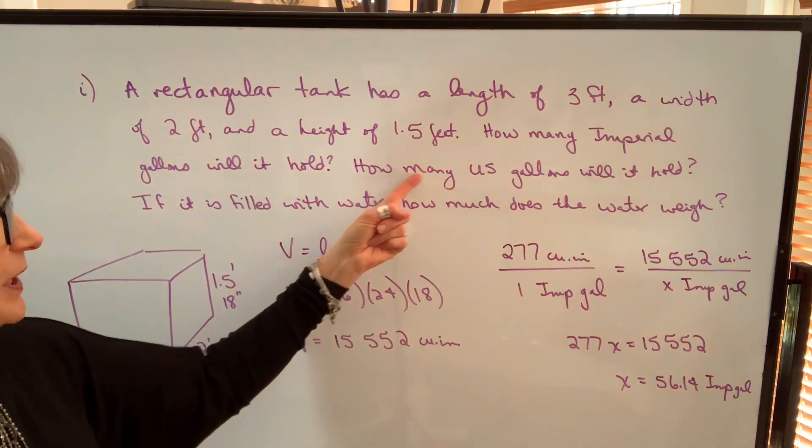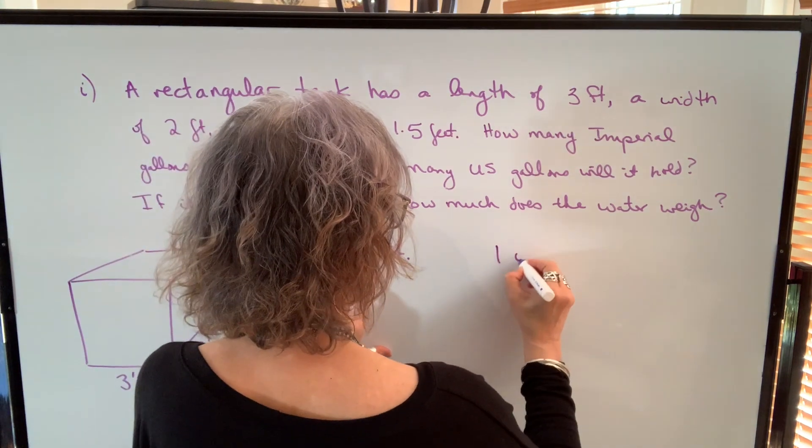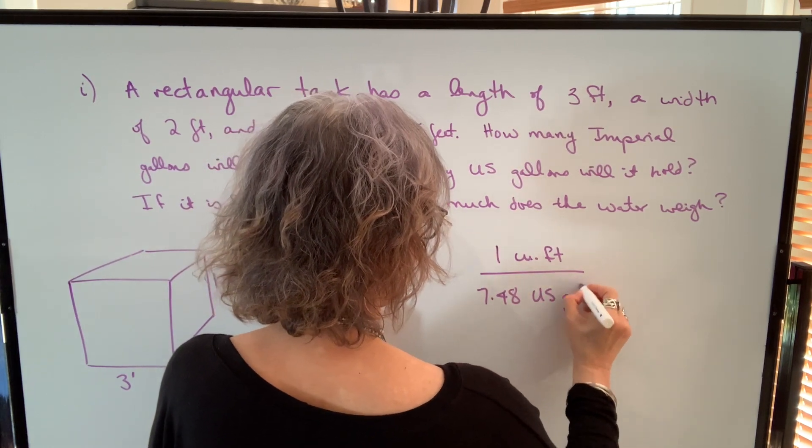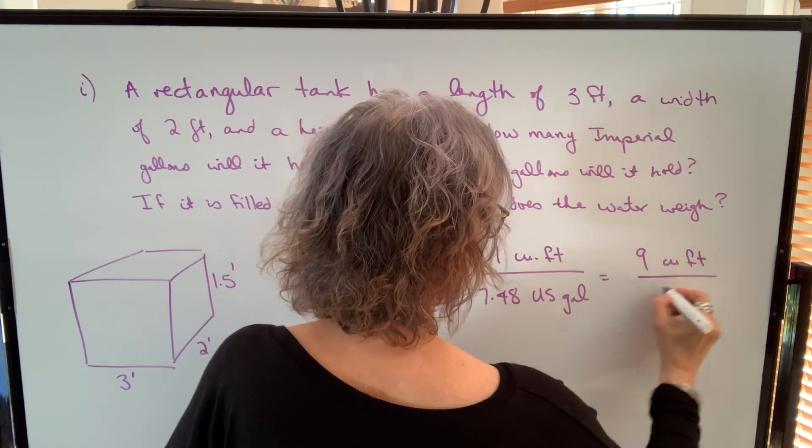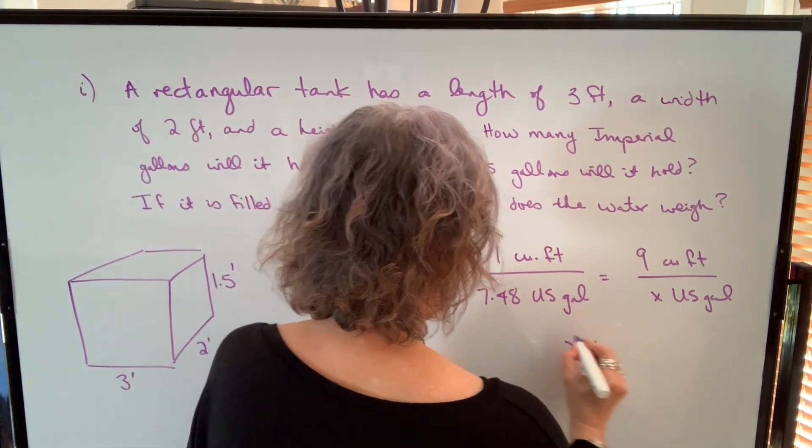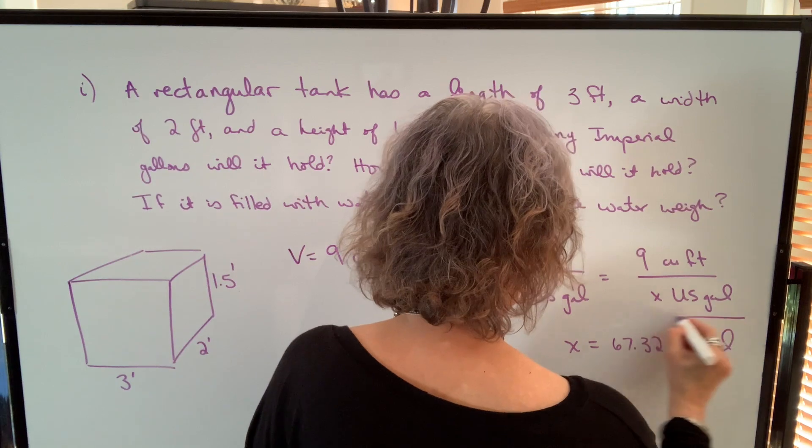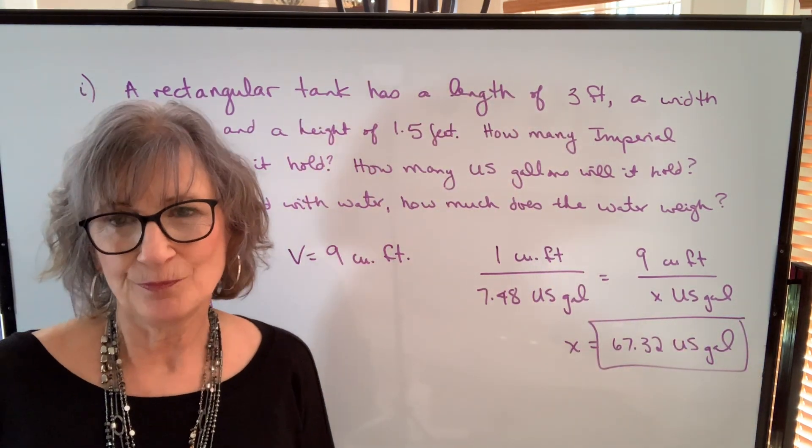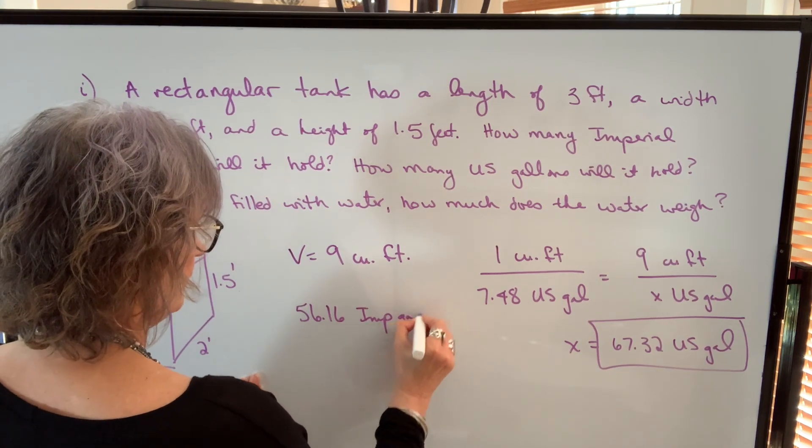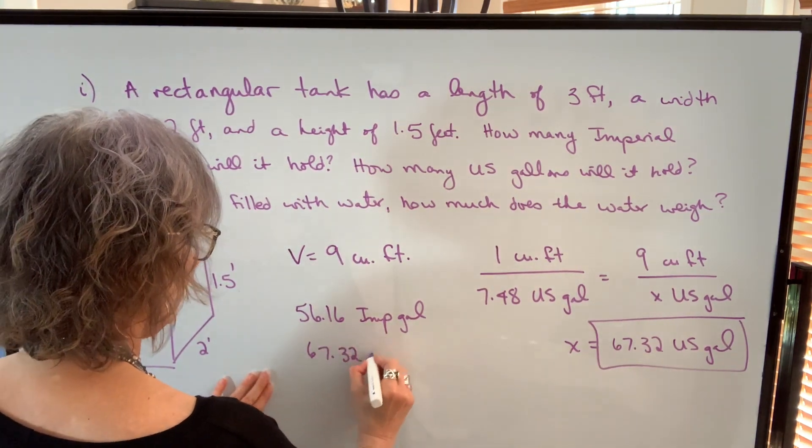Now let's take a look at the next question. How many US gallons? I'm going to go back to my volume in cubic feet. I had a volume of 9 cubic feet, and I know that one cubic foot will hold approximately 7.48 US gallons. So I should be able to find the capacity if I have 9 cubic feet. 1 times x is x. 7.48 times 9 is 67.32 US gallons. US gallons are smaller, so I should have more. So far we know that we have 56.16 Imperial gallons, or 56.14 depending on how you calculated it. We have 67.32 US gallons in that same container.